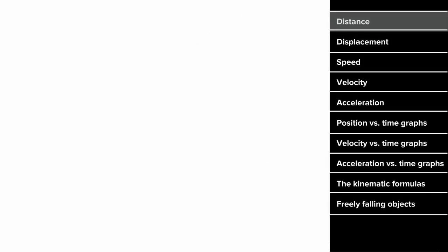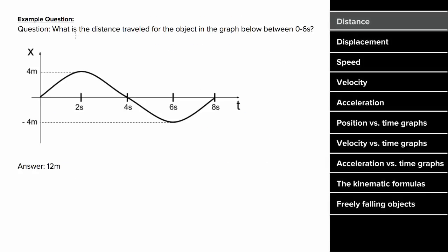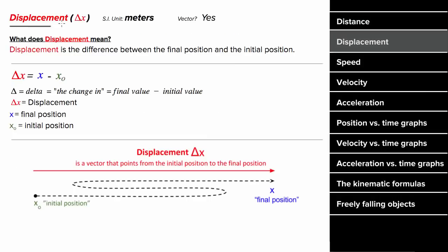What does an example problem for distance look like? Let's say you had this graph, and the question was: what's the distance traveled for the object between zero and six seconds? Between zero and two seconds, the object moved forward four meters. Between two and four seconds, the object moved backward four meters. And between four and six seconds, the object moved backward another four meters, which means the total distance would be four plus four plus four, giving you 12 meters of distance traveled.